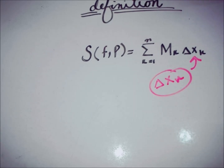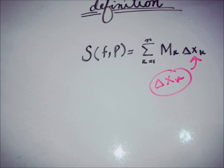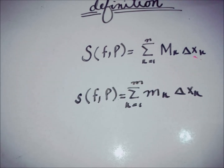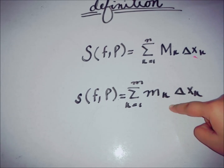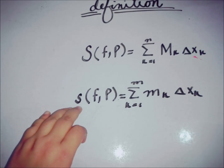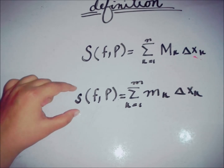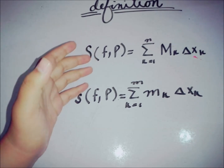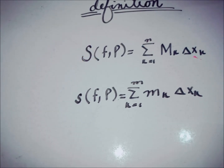This is the definition of the upper Riemann sum discussed in a previous video. Similarly, for the lower Riemann sum, we use infimum instead of supremum — that is, small mk within the boundary A to B of the partition P. We represent the lower Riemann sum with capital S-lower and the upper Riemann sum with capital S-upper.